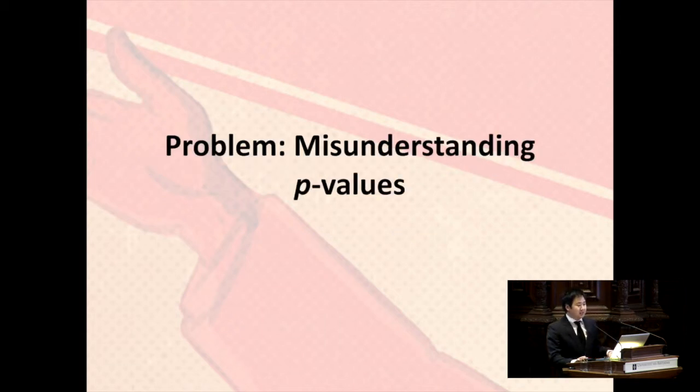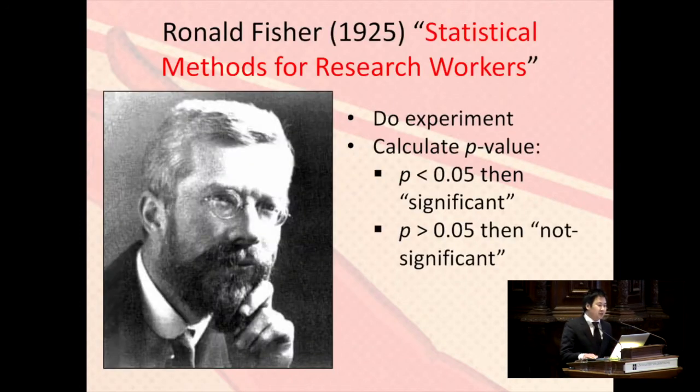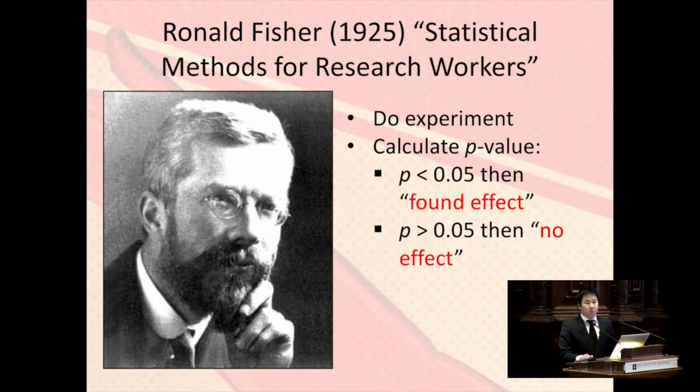The problem is a misunderstanding of p-values. P-values were introduced and popularized by Ronald Fisher in his 1925 book, Statistical Methods for Research Workers. What you have to do is do an experiment, calculate one number, a p-value, and a p-value can be either significant or not significant. People interpret this as we found an effect or we did not find an effect, and that's very black and white. This method is used for most of the research that you know.